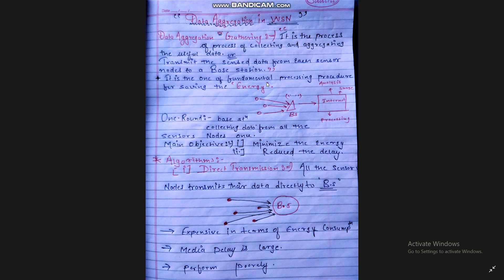Data aggregation is one of the fundamental processing procedures for saving energy. In data aggregation, for transmission of data, we use one term called one round. In one round, the base station collects data from all the sensor nodes once — the base station must collect all the data from all sensor nodes in one round. The main objective of data aggregation is to minimize energy and reduce time delay, so that our network's lifetime is enhanced. We have a set of algorithms that are compared on the basis of energy consumption and delay.